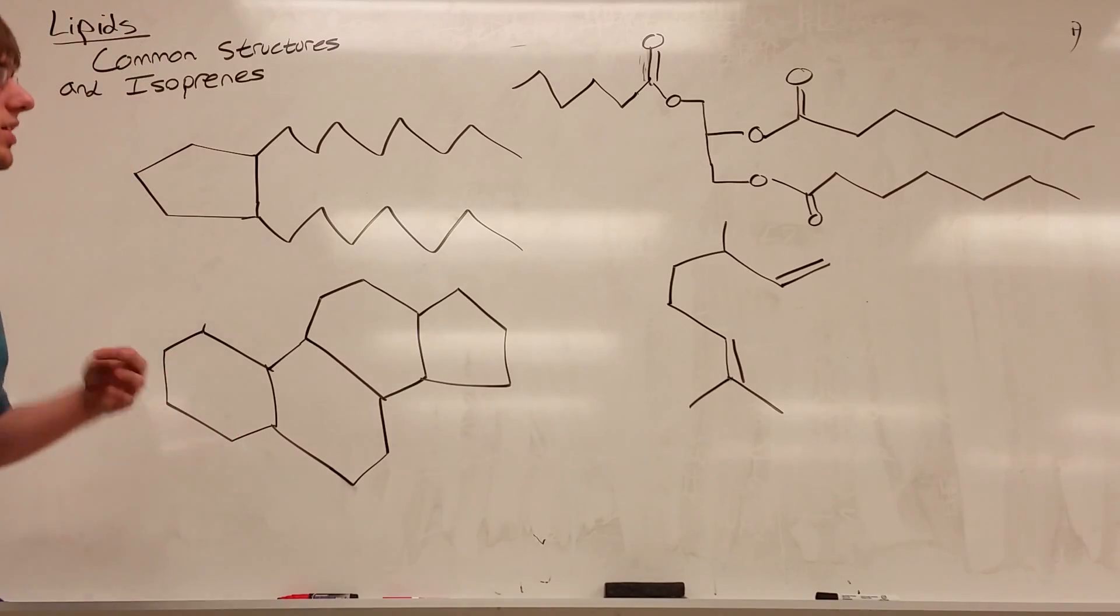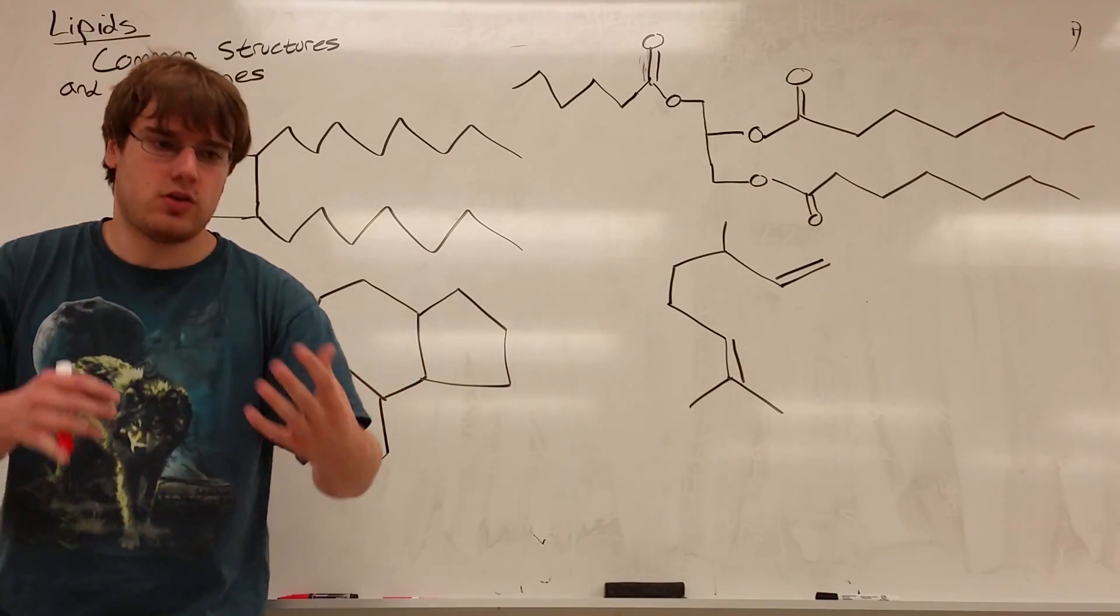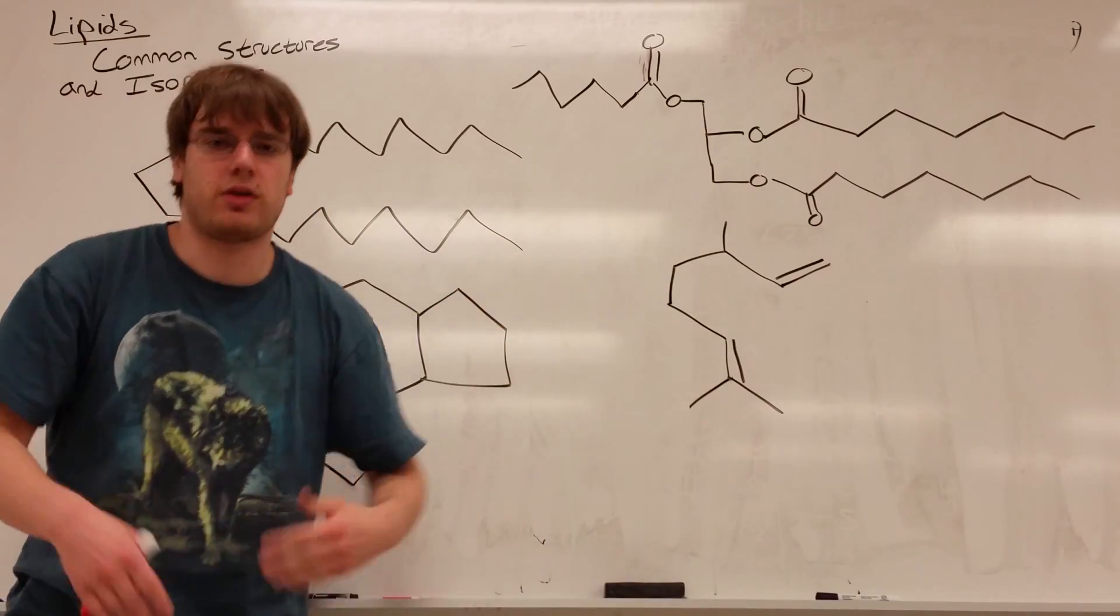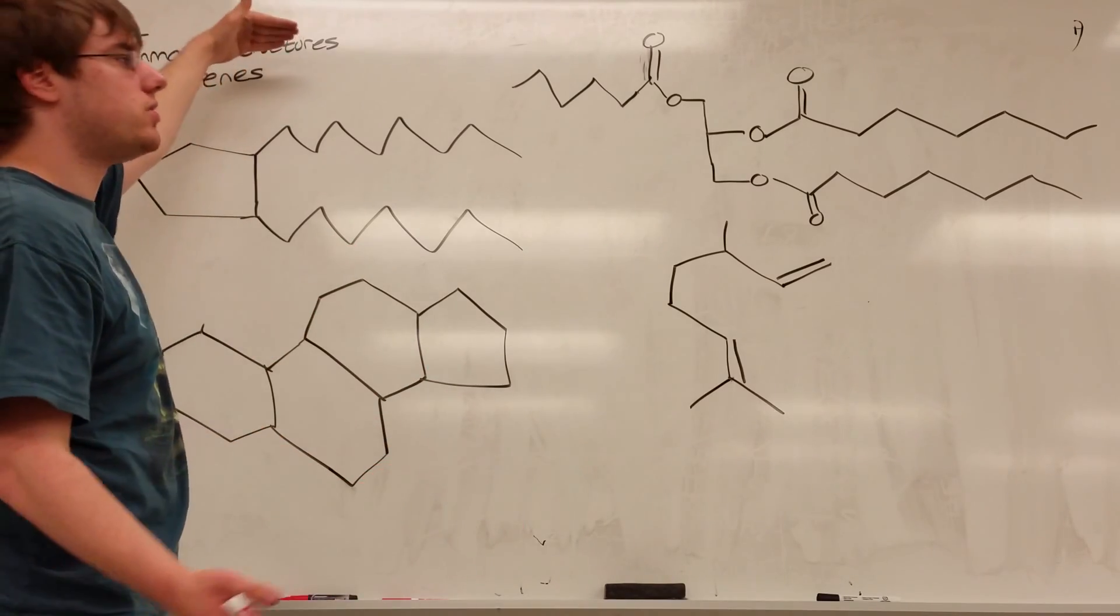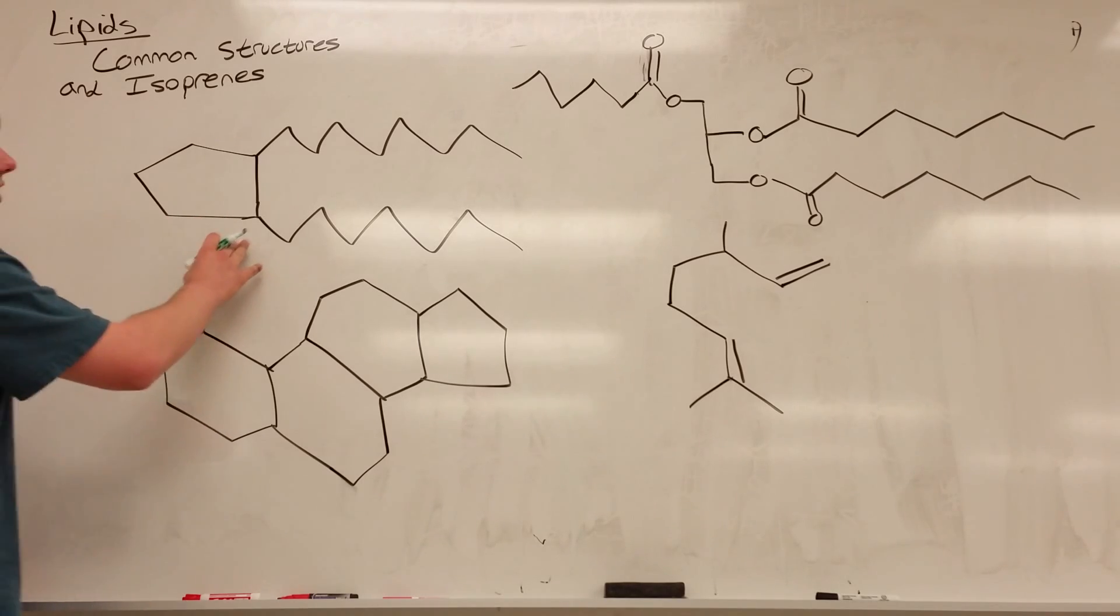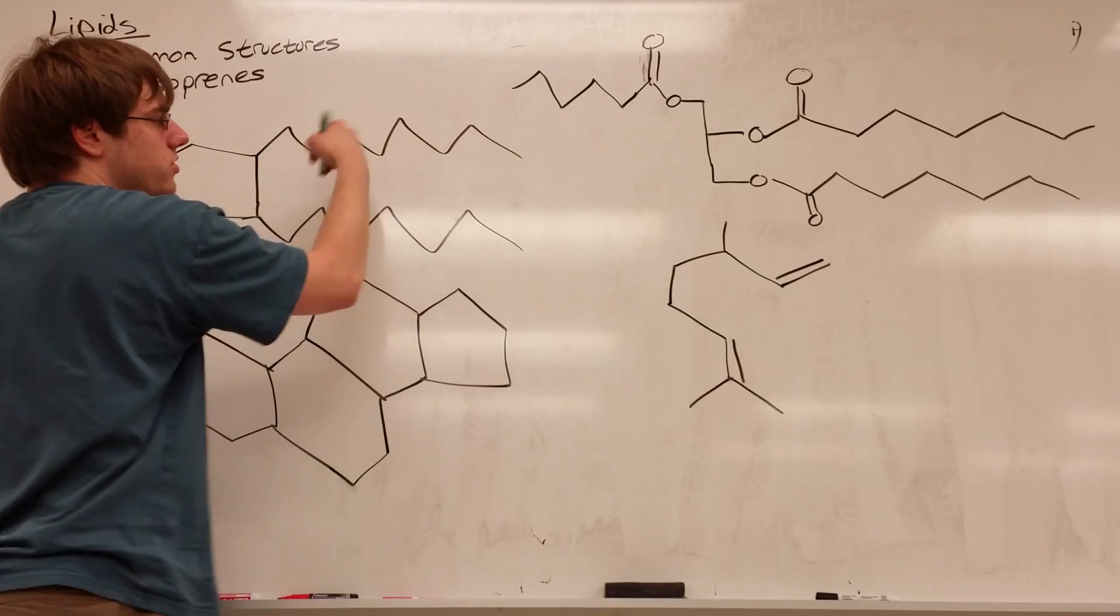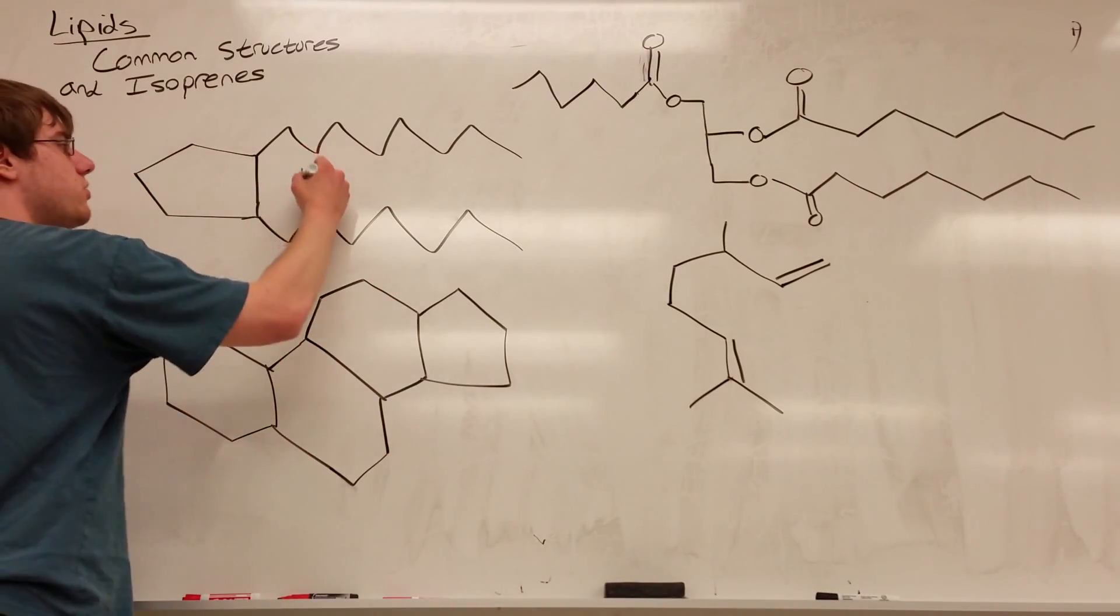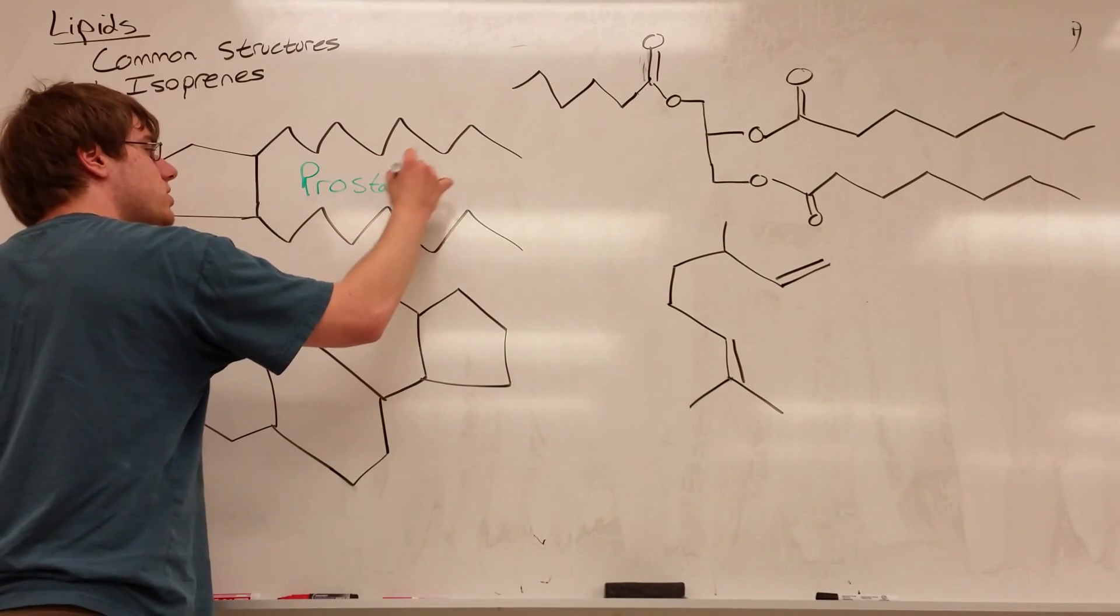The first thing to talk about that's commonly asked is structures. They'll give you structures and ask you which is derivative of a prostaglandin or derivative of cholesterol. I'm going to talk about the base structures, the most common structures you're going to see involved with lipids. First of all, the structure that kind of looks like a jellyfish: a five-membered ring with two tails coming off of it. This is what a prostaglandin looks like.